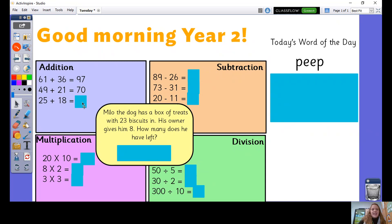Looking at our subtraction, 89 subtract 26 equals 63, 73 subtract 31 equals 42, and 20 subtract 11 equals 9.